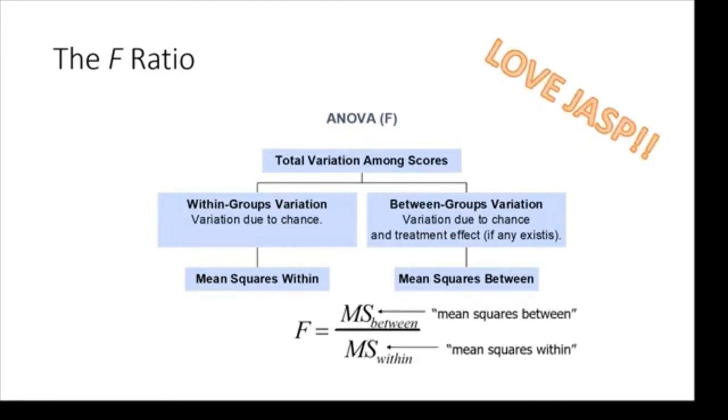And this is where I like to tell students that this is where we love JASP. I'm going to show you how to make JASP do this calculation for you. So you don't have to worry about figuring out how to do this math. But I'd like you to understand conceptually what the math is doing. It's taking a ratio of variability due to the effect over random error.